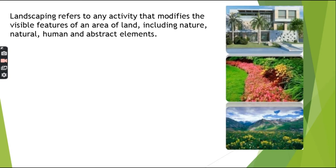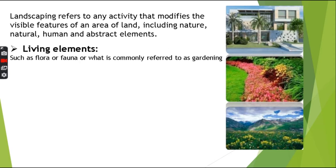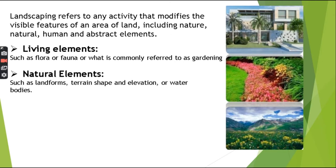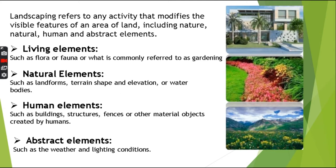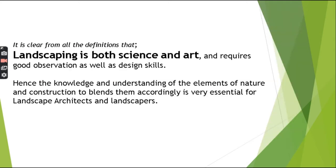Landscaping refers to any activity that modifies the visible features of an area of land including natural, human and abstract elements. The living elements include flora, or what is commonly referred to as gardening. The natural elements are landforms, terrain shape and elevation or water bodies. The human elements include buildings, structures, fences or other material objects created by humans. And the abstract elements are the weather and lighting conditions. It's clear from all definitions that Landscaping is both science and art and requires good observation as well as design skills. Hence, the knowledge and understanding of the elements of nature and construction to blend them accordingly is very essential for landscape architects and landscapers.